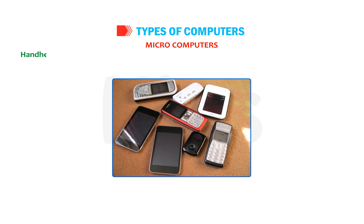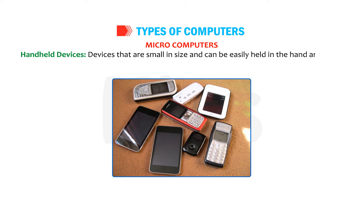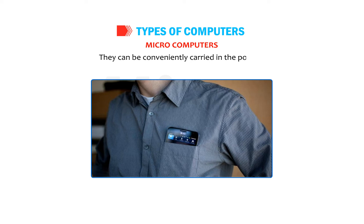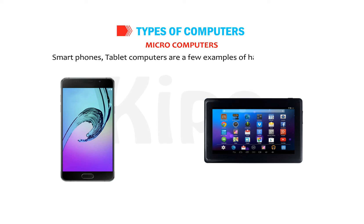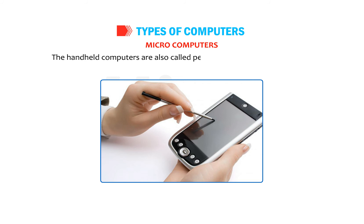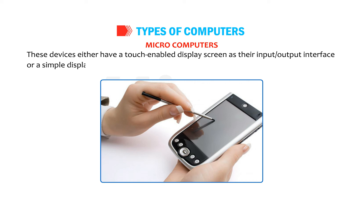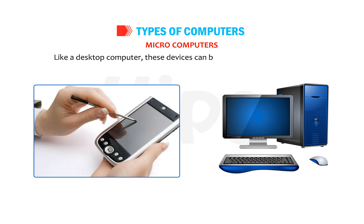Handheld Devices: devices that are small in size and can easily be held in the hand are called handheld devices. They can be conveniently carried in the pocket. Smartphones and tablet computers are a few examples of handheld devices. The handheld computers are also called Personal Digital Assistants, PDAs. These devices either have a touch-enabled display screen as their input or output interface, or a simple display unit with a keyboard. Like a desktop computer, these devices can be used to perform any task.